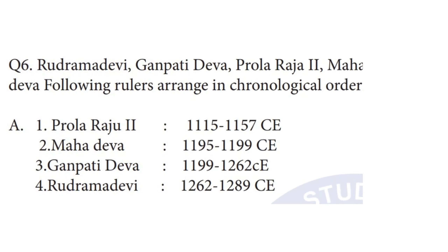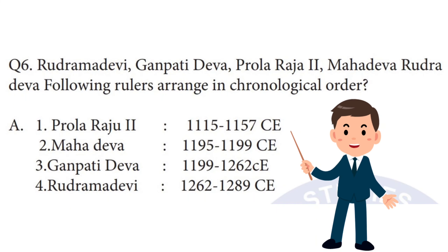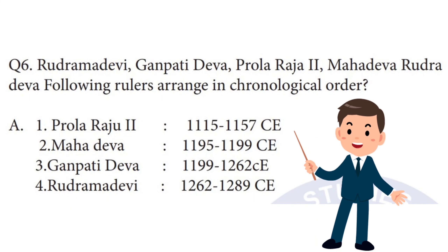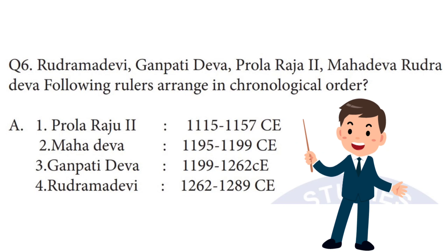Question No. 6: Arrange the following rulers in chronological order — Rudramadevi, Ganapati Dev, Prola Raja 2, Mahadeva, Rudra Dev. Answer. Chronological order: Prola Raja 2, Mahadeva, Ganapati Dev, Rudramadevi.